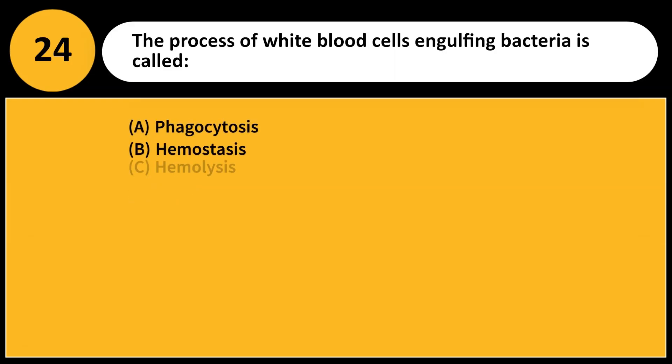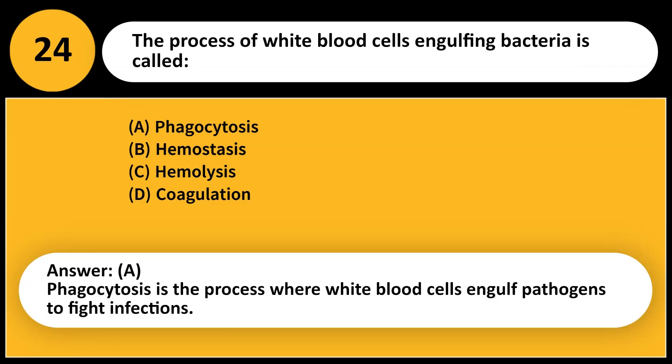The process of white blood cells engulfing bacteria is called: A. Phagocytosis. B. Hemostasis. C. Hemolysis. D. Coagulation. Answer: A. Phagocytosis is the process where white blood cells engulf pathogens to fight infections.